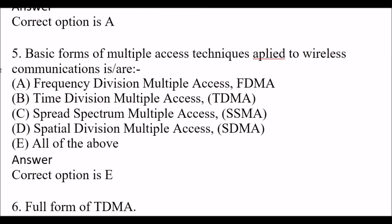Next question: Basic forms of multiple access techniques applied to wireless communication. Option A: FDMA (frequency division multiplexes). Option B: TDMA (time division multiplexes). Option C: SSMA (spread spectrum multiplexes). Option D: SDMA (spatial division multiplexes). Option E: all of the above. The right answer is Option E, all of the above.